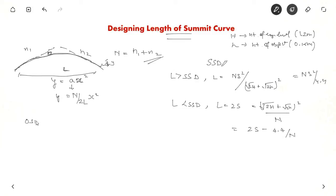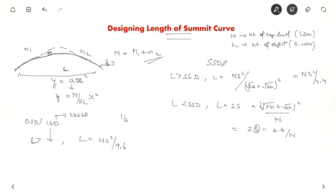For overtaking sight distance or intermediate sight distance, which is usually 2 × SSD, when L is greater than OSD or ISD, the formula is: L = NS² / 9.6. Here both H and h are taken as 1.2 m, which gives NS² / 9.6. If L is less than OSD or ISD, then: L = 2S − 9.6 / N.